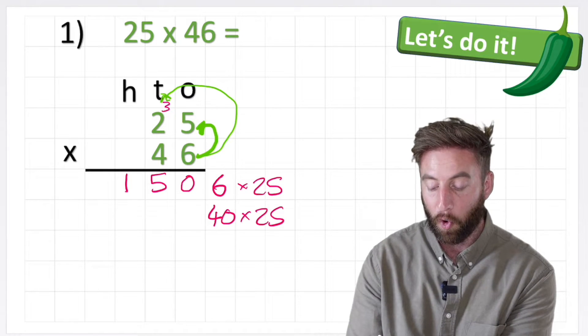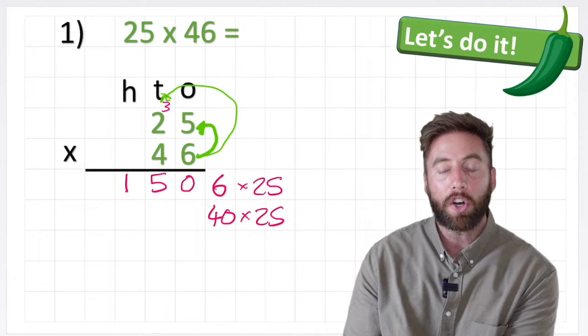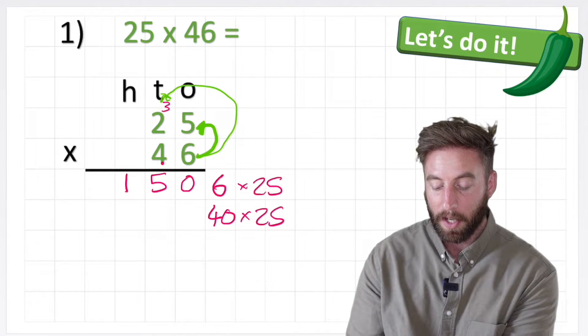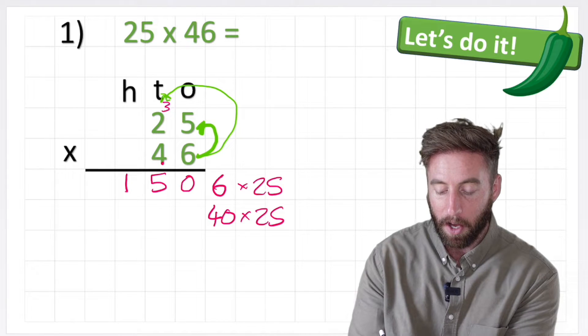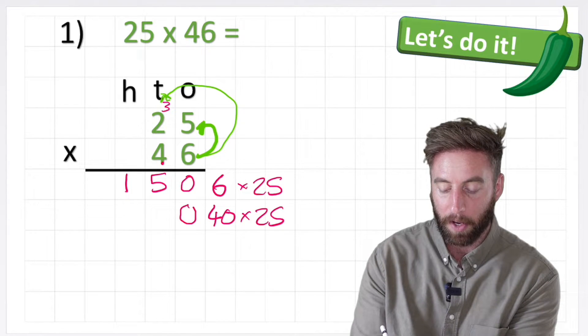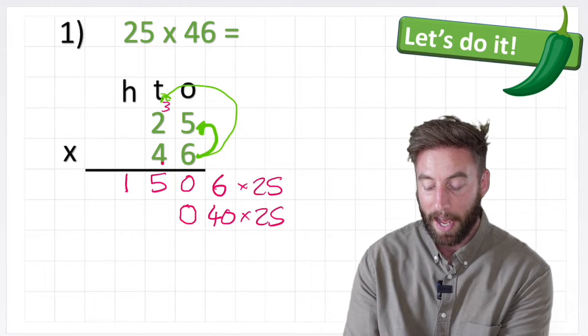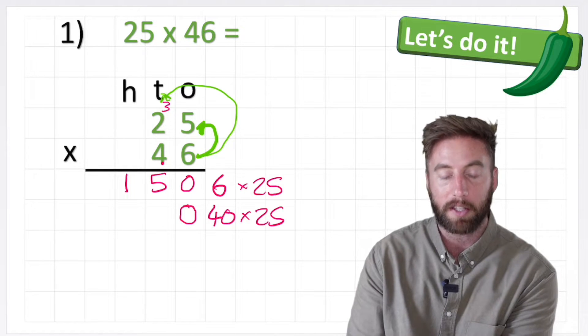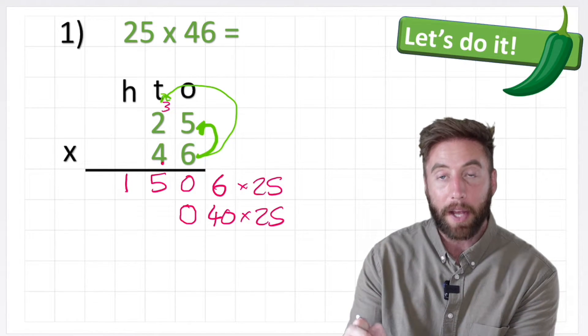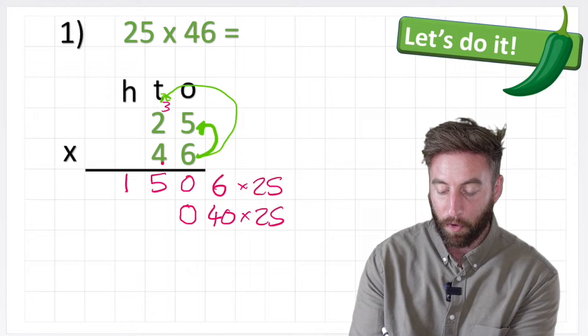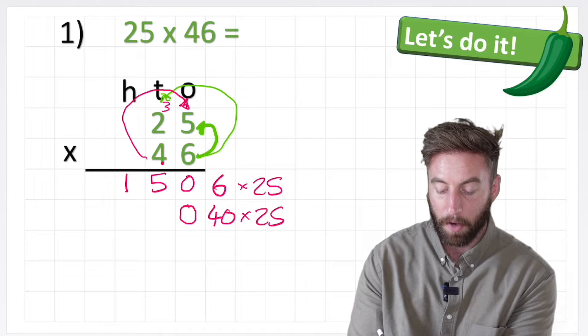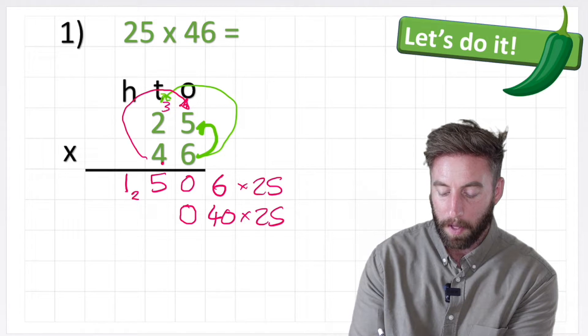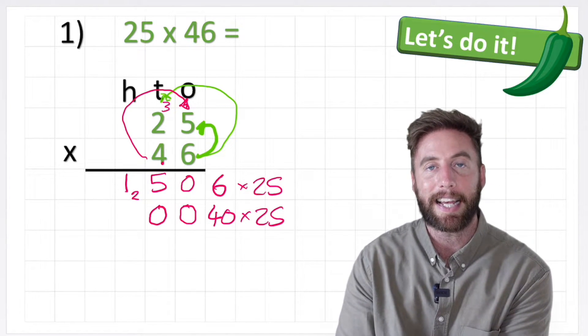Now I'm answering 40 times 25. So I can't just do 4 times 5 and 4 times 2 because that's not a 4, it's a 40. So to make my answer 10 times larger, I'm going to put a placeholder, a 0 in that column here, and that automatically makes my whole answer now 10 times larger. So now I can start and I'm going to do 4 times my 5, and 4 times 5 is 20. So I'm going to carry my 2 into this column and put my 0 in the tens column.